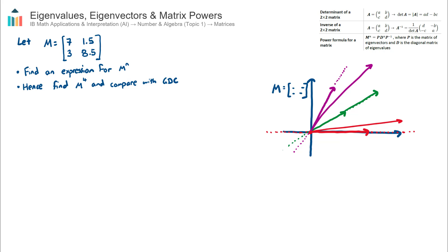Now the symbols we use for eigenvalues and eigenvectors: for eigenvalues we use the lambda symbol, so we'll be dealing with lambda 1 and lambda 2. For eigenvectors we use lowercase x, so x1 for eigenvector 1 and x2 for eigenvector 2.